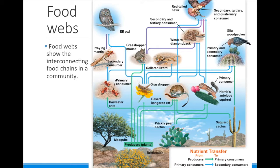Food webs can help ecologists study the impacts that species will have if they go extinct. For example, if the western diamondback snake went extinct, it would no longer eat the desert kangaroo rat or the Harris's antelope squirrel. These rodents would probably increase because their main predator is gone. With more rodents, they would eat more of the prickly pear cactus — and might even cause it to go extinct. It is important to make predictions about what could happen in the community if certain species are disturbed, and we use those predictions to inform government decisions about which species to protect.